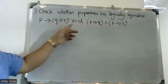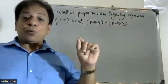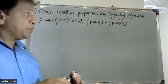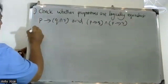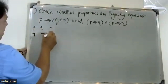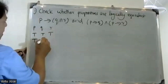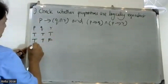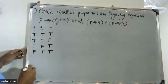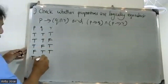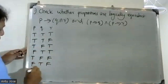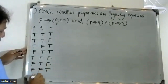Here we have three variables p, q, r. Therefore the possible number of truth table rows will be 2 to the power 3, which is 8. The combinations are: T T T, T T F, T F T, F T T, T F F, F T F, F F T, F F F.